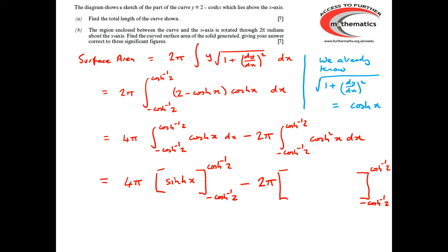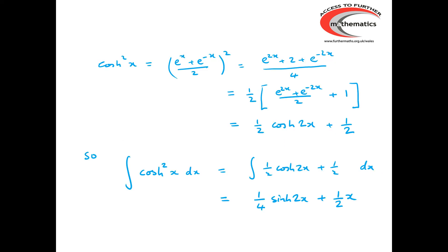The second integral requires us to integrate cosh² x. Whilst that isn't difficult, it isn't something we can immediately write down. One approach: remember that cosh x = (eˣ + e⁻ˣ)/2, so cosh² x is that expression squared.